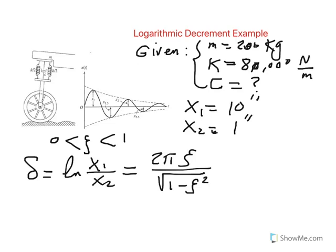And also, another formula that we got, which was very useful, is that once we got delta in terms of zeta, eventually you want to find zeta in terms of delta. So that equation becomes delta divided by square root of 4 pi squared plus delta squared.